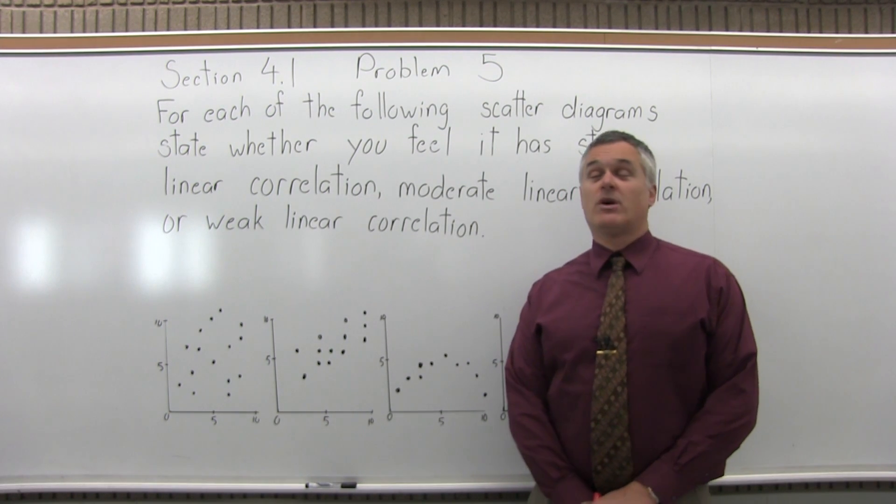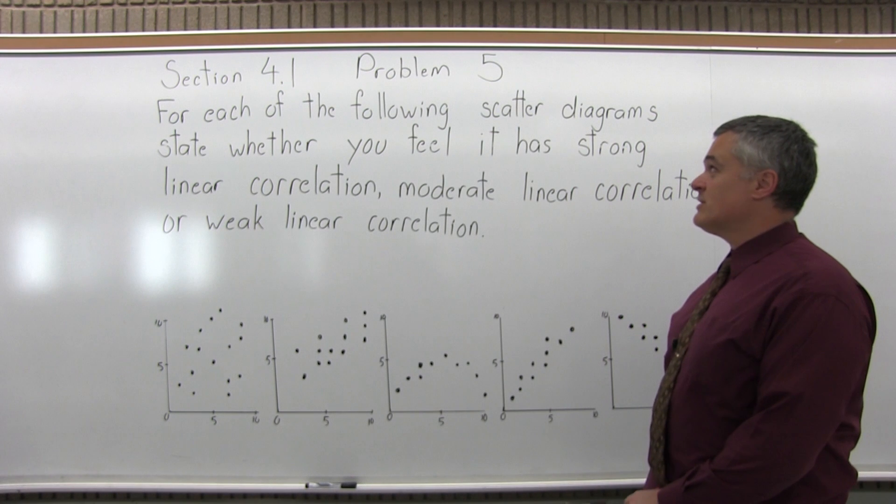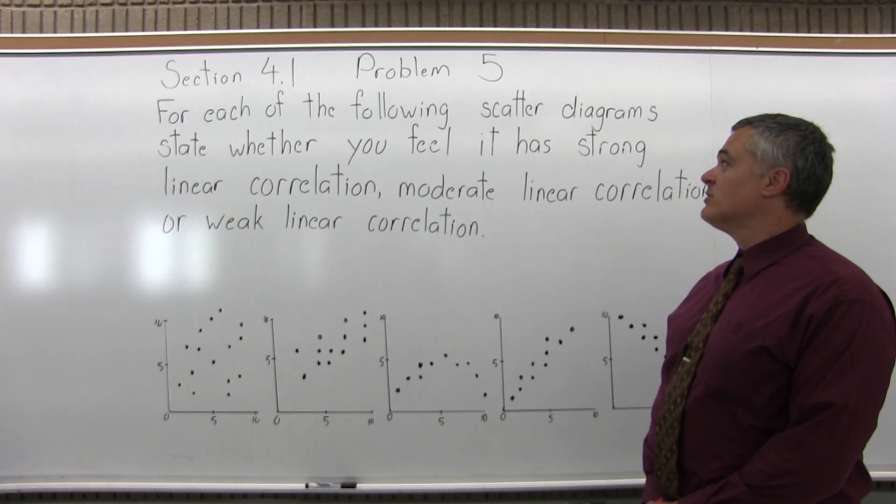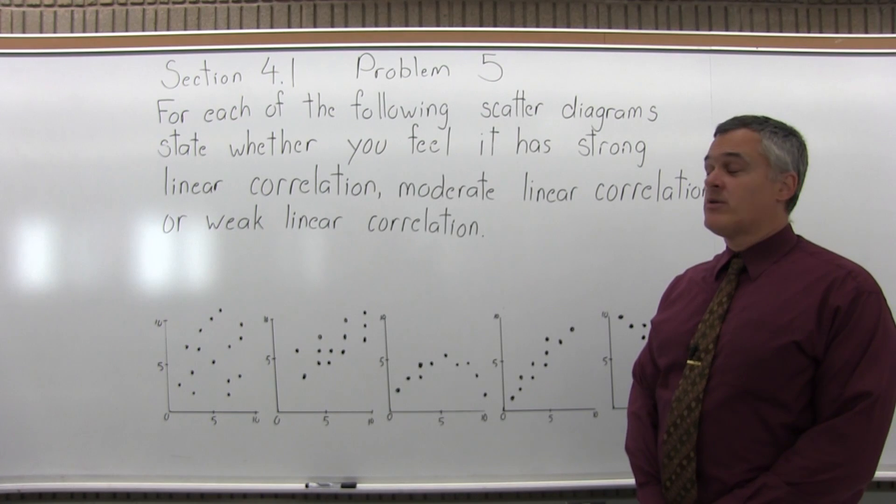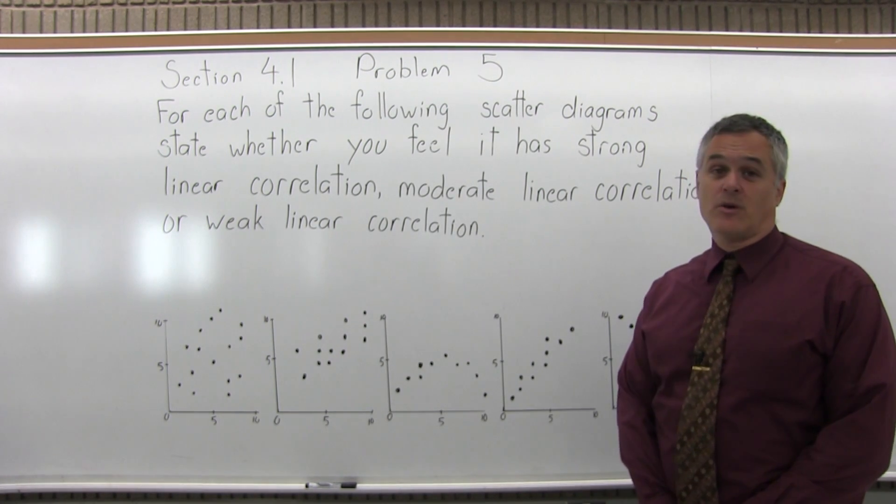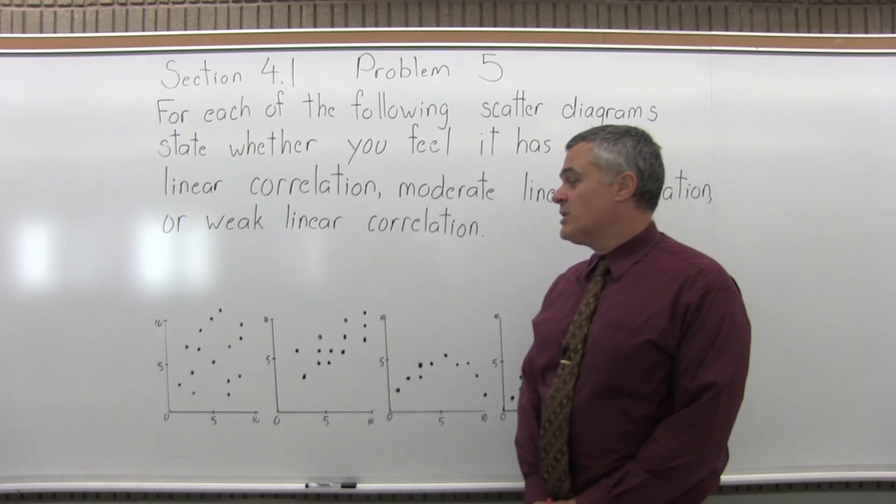This is Section 4.1, Problem number 5. It says for each of the following scatter diagrams, state whether you feel it has strong linear correlation, moderate linear correlation, or weak linear correlation.